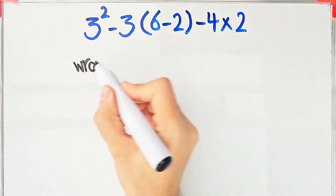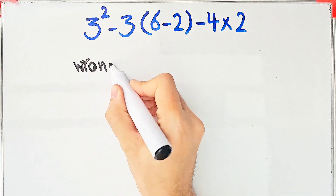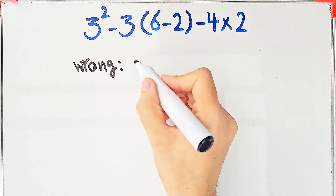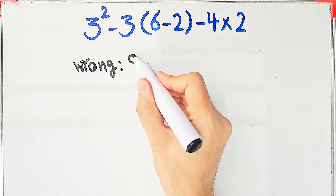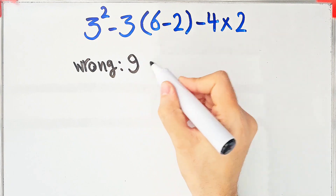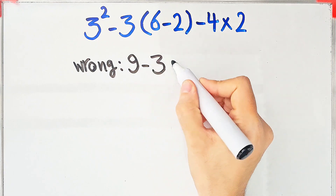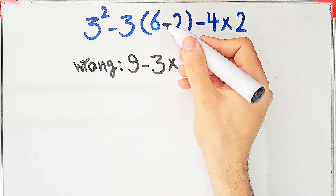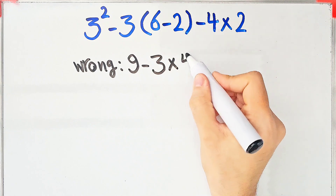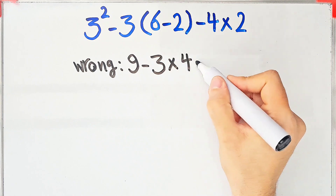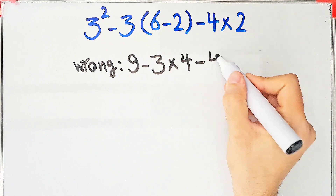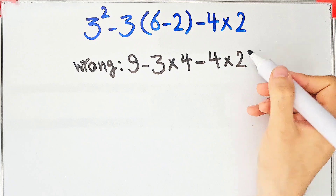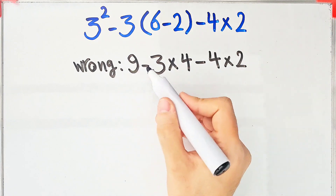For example, some people solve this question like this: 3 to the power of 2 equals 9, 9 minus 3, then times 6 minus 2, which equals 4, minus 4, then times 2. They start from the left and simplify the question.